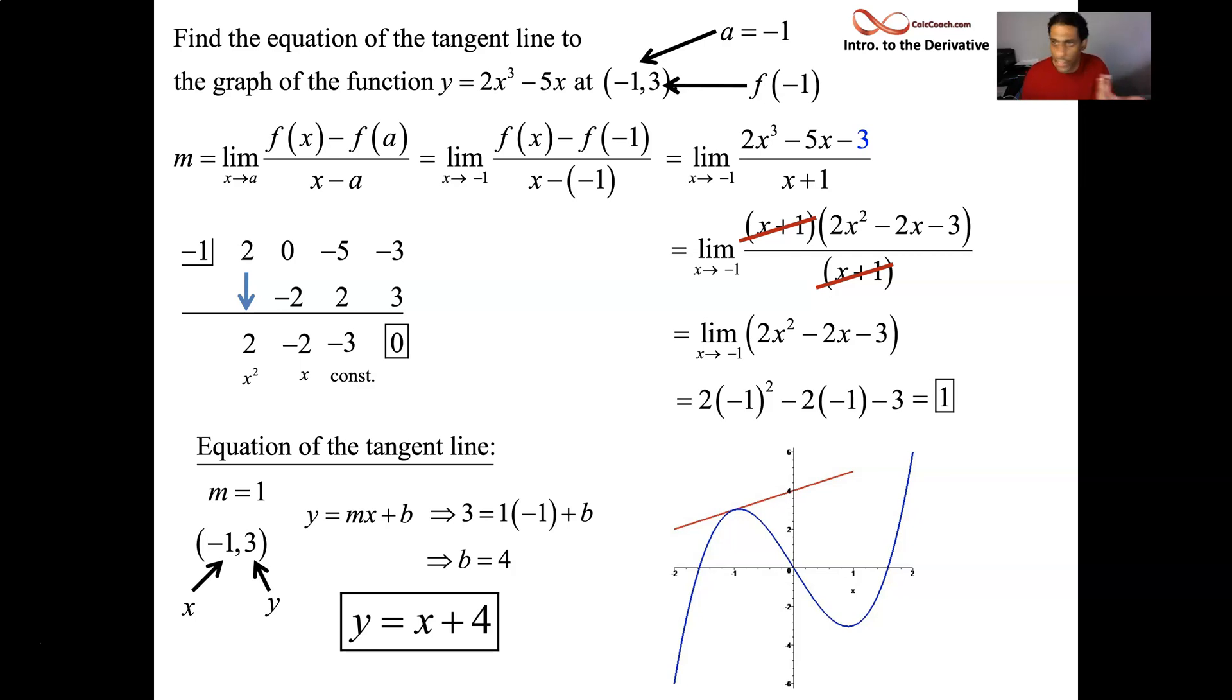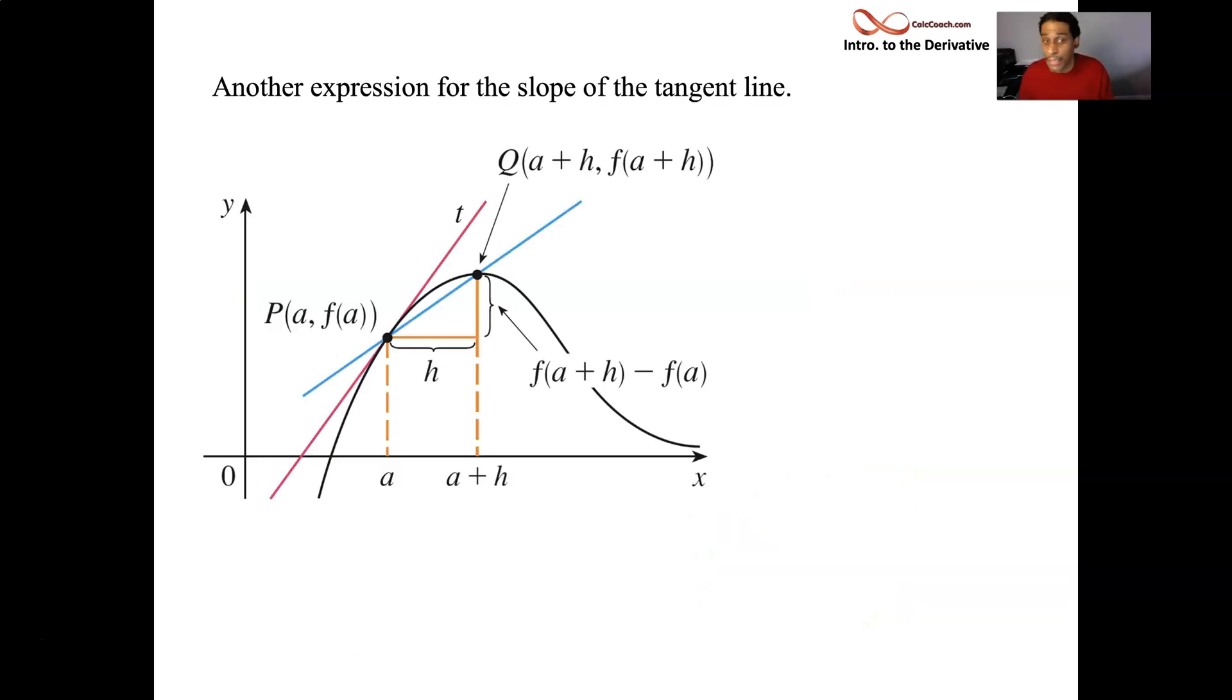It's a similar formula. It's just changing the names. Instead of having x approach a, we're going to have some distance between the two be called h. And that distance between them is going to 0. One stands stationary. The other one's moving towards it. And so the distance between them is going to 0. So we're going to have the limit as h goes to 0. We still have an a, the point of tendency that we want to start at. And then plus the h gives us the other one.